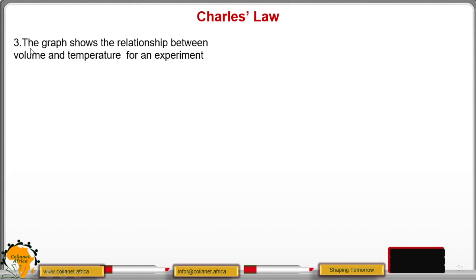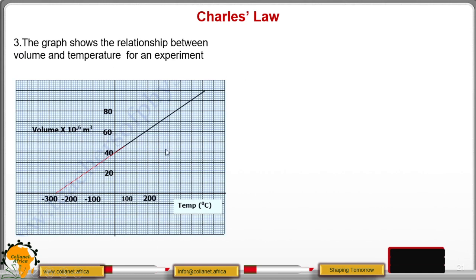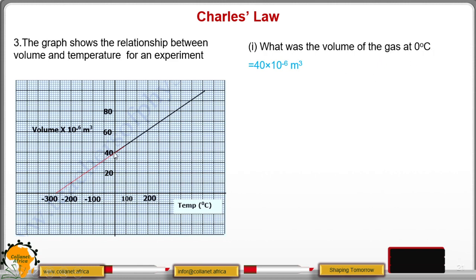Example three: the graph shows the relationship between volume and temperature for an experiment. We have drawn the graph and extrapolated. Question one: what was the volume of the gas at 0 degrees Celsius? At 0 degrees Celsius, reading from the graph, the value is 40. The volume is multiplied by 10 to the power negative 6, so the volume is 40 times 10 to the power negative 6 cubic meters.